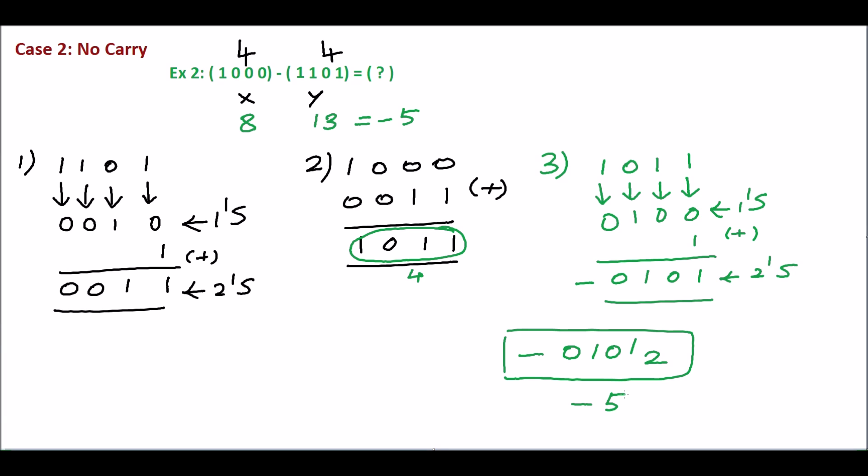We will summarize the steps. First, find the 2's complement of the subtrahend. Then add the first number and the 2's complement of the subtrahend. If a carry is produced in the addition, discard the carry. Otherwise, take the 2's complement of the sum and assign a negative sign. Thank you.